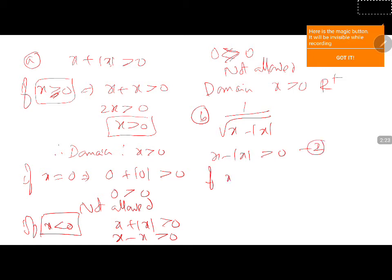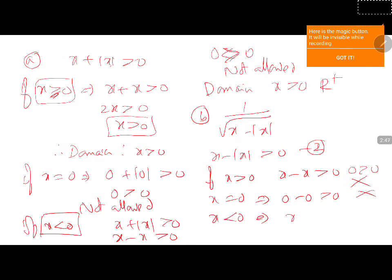If x is greater than 0, we get x minus x greater than 0 because mod x is plus x, giving 0 greater than 0 — not allowed. x equals 0 implies 0 minus 0 equals 0, which gives 0 greater than 0 — this is also not allowed.